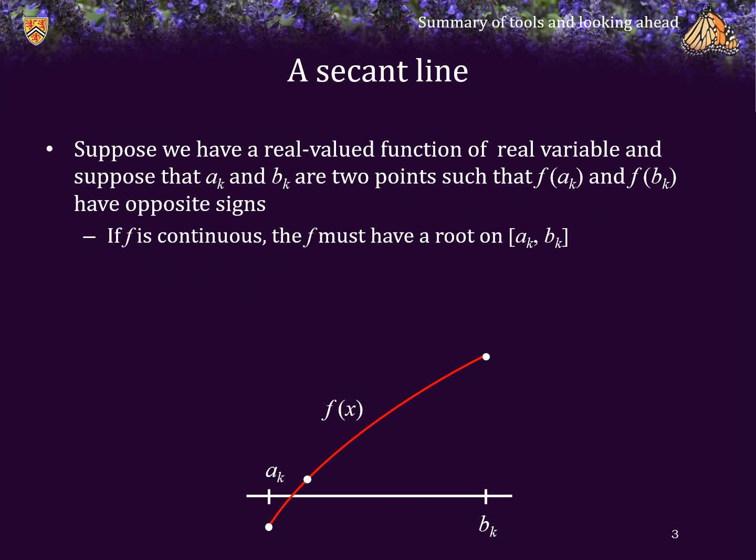Let's take a step beyond the bisection method. Suppose we have a real-valued function of a real variable, and we have that a root is bounded by two points, a sub k and b sub k. That is, the value of the function has opposite signs at these endpoints, and the function is assumed to be continuous on that interval.